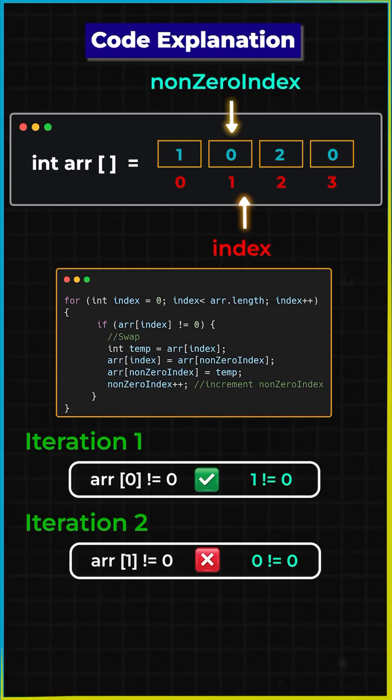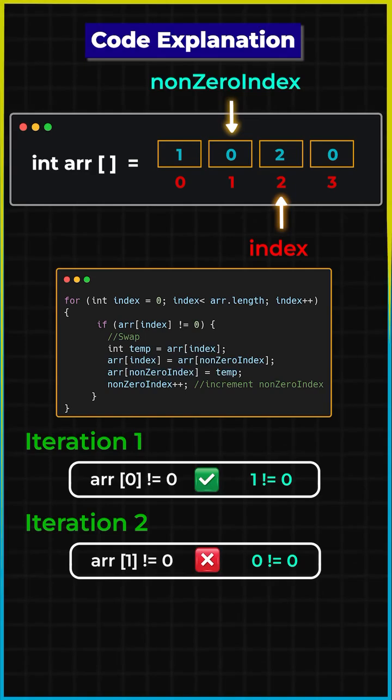Note that the non-zero index is still pointing to index 1, but the index has moved forward.